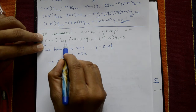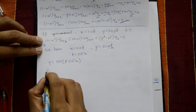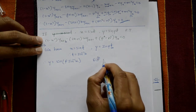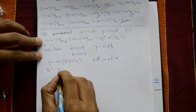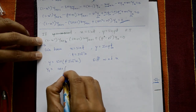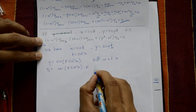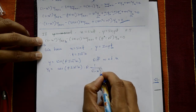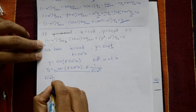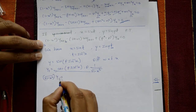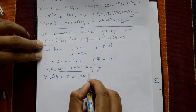Differentiate y two times, then apply Leibniz theorem. First differentiation: y₁ = cos(p · sin⁻¹ x) · p · (1 / √(1 - x²)). So y₁ = p · cos(p · sin⁻¹ x) / √(1 - x²).